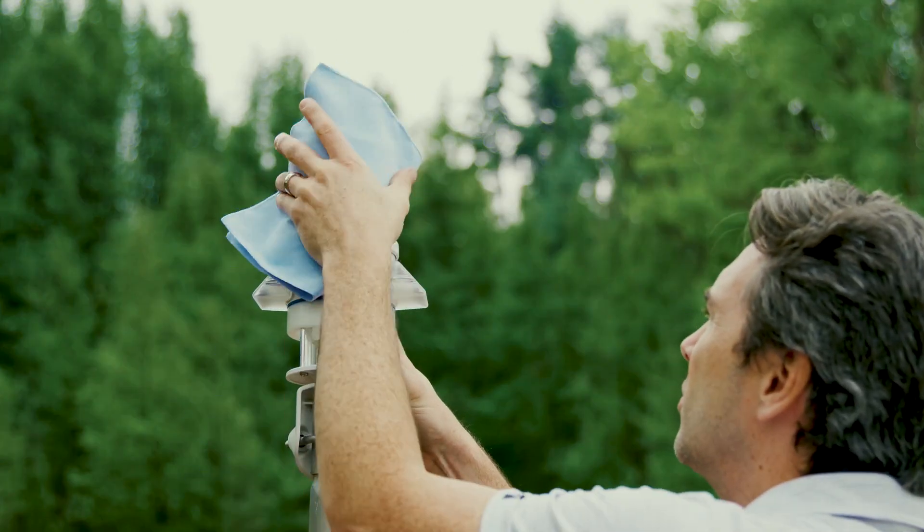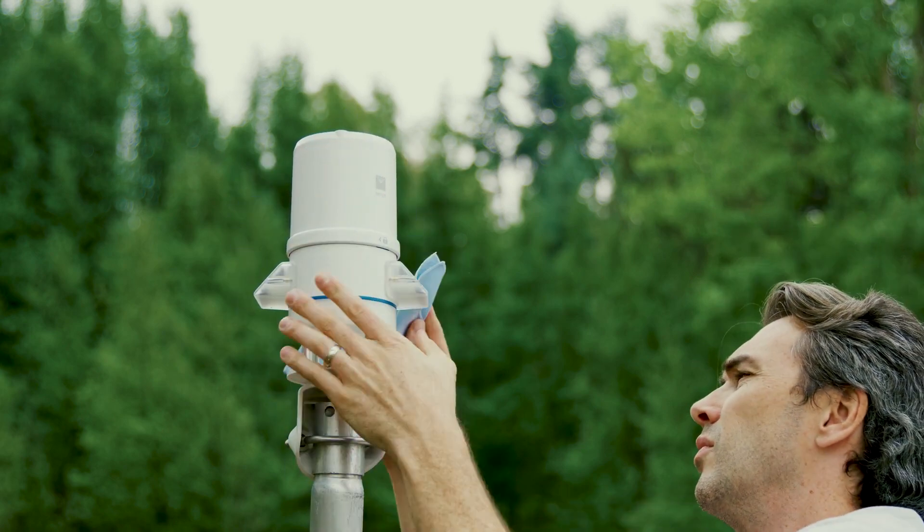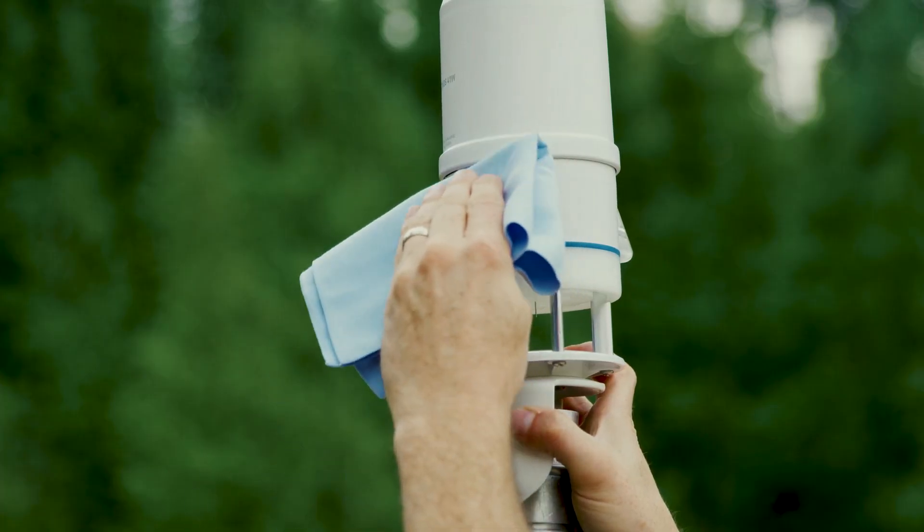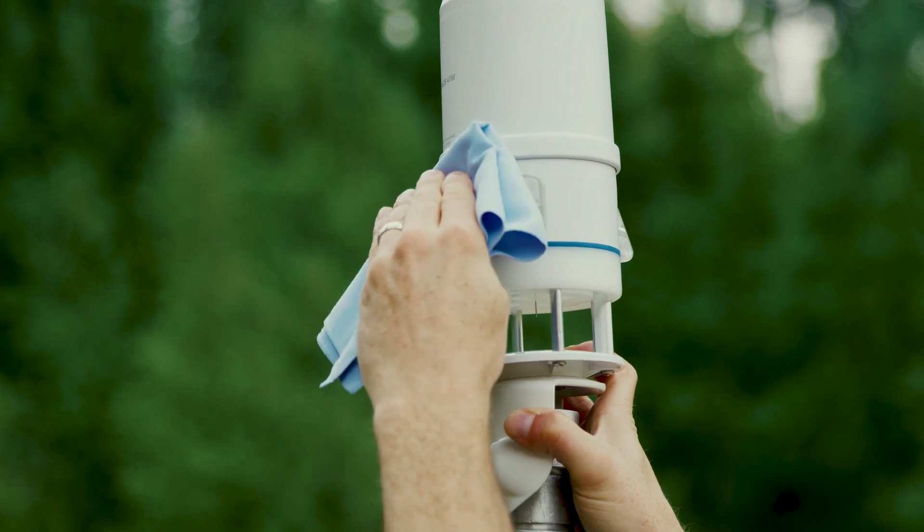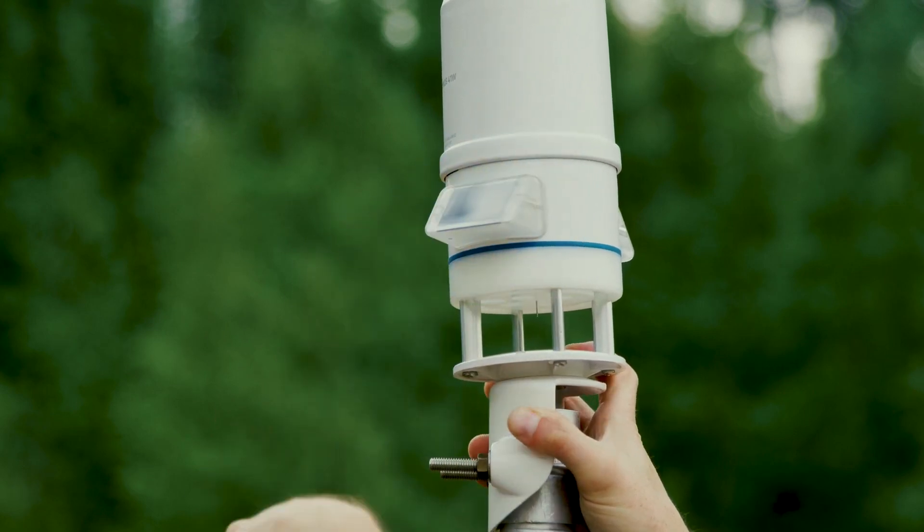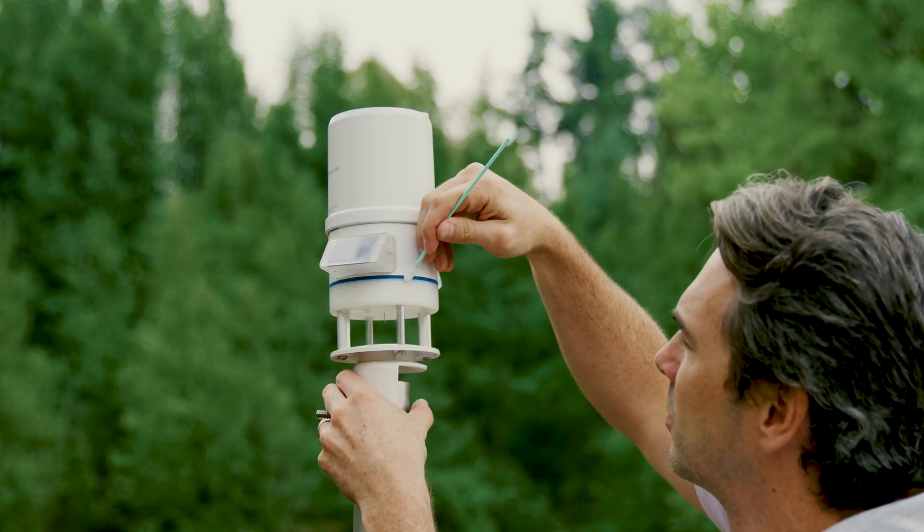Use a damp non-abrasive cloth to wipe the outside. Wipe off the solar panels taking care not to scratch their surface as that would reduce their efficiency. Use a soft brush to remove any residual debris.